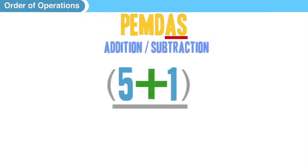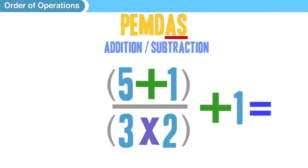Okay, how about this? We have 5 plus 1 in parentheses divided by 3 times 2 in parentheses plus 1. Okay, so let's break this one down.